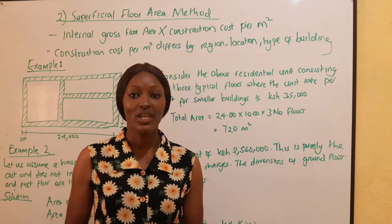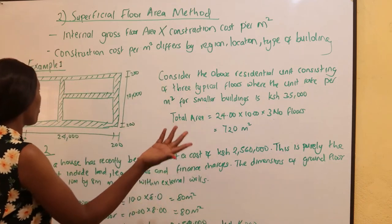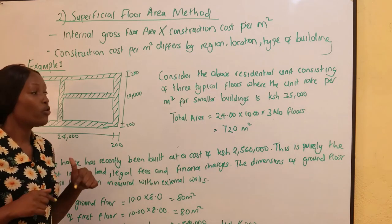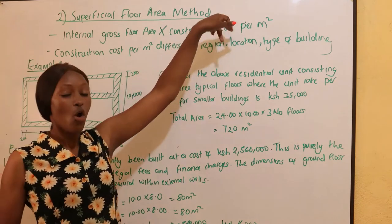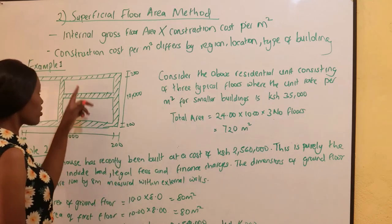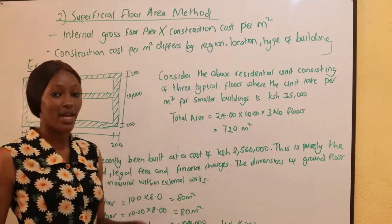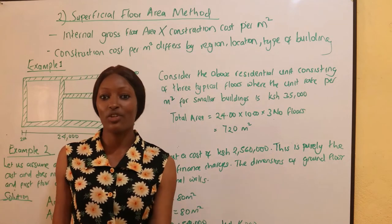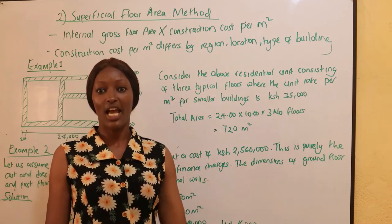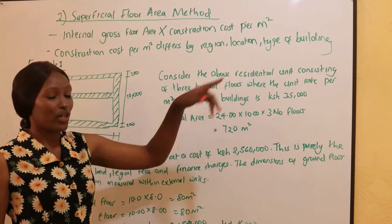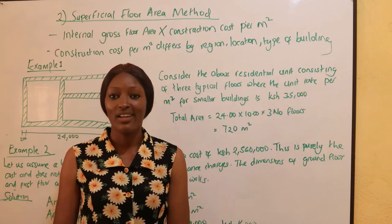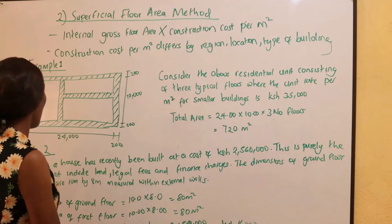You also have to exempt any internal walls and ignore staircases inside the building. The formula for the superficial floor area method is: internal floor gross area multiplied by the construction cost per meter squared. This data we get from previous buildings. The construction cost per meter squared usually varies by region — for example, it differs between the eastern region of Kenya and the Mediterranean, and even between Meru and Nairobi — and also by building type.